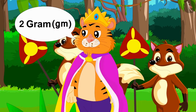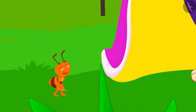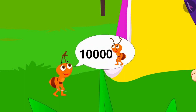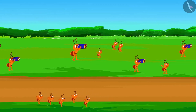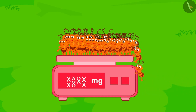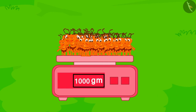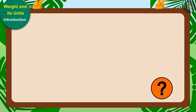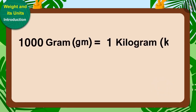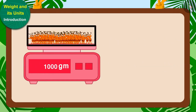The king was about to get 2 grams of sugar when the ant revealed 10,000 more ants were watching over the king for protection. The king weighed those 10,000 ants — they weigh 1000 grams. And 1000 grams is equal to 1 kilogram, so 10,000 ants weigh 1 kilo.